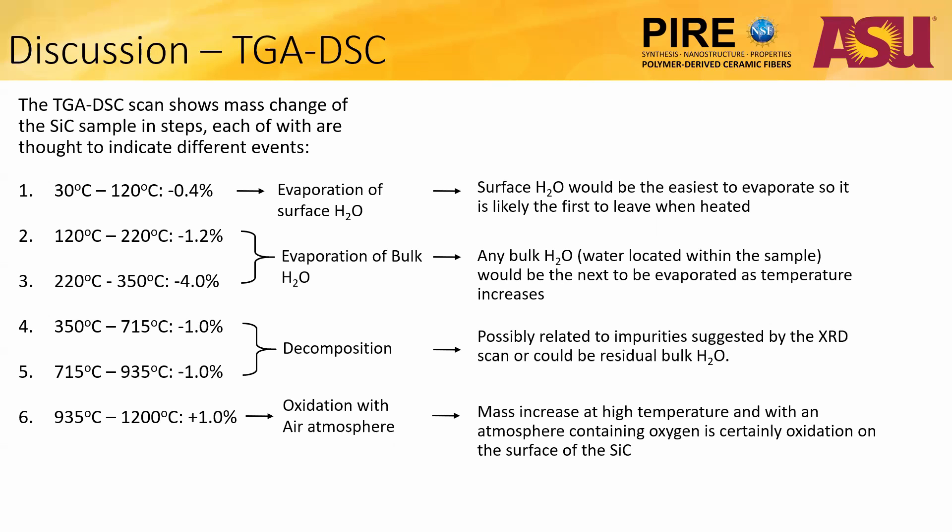The TGA-DSC scan showed mass changes of the SiC sample in steps, each of which is thought to correspond to a different event. Step one is most likely evaporation of surface water present on SiC. Steps two and three are both likely to be evaporation of bulk water that the SiC had absorbed throughout itself. The decomposition steps four and five are more uncertain—these could be associated with impurities present within the sample that the XRD pattern suggested, or could be more residual water loss. Step six is the first mass gain throughout the scan, and given the high temperature it takes place at and the air-filled atmosphere, it is most certainly oxidation on the surface of the SiC.